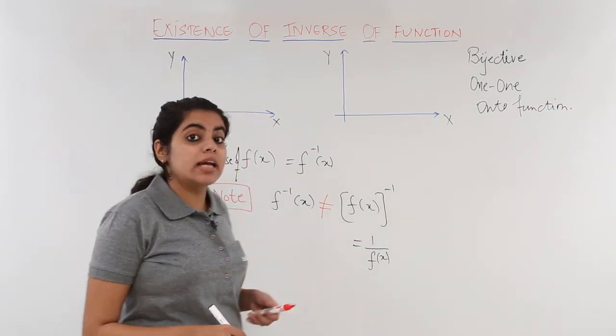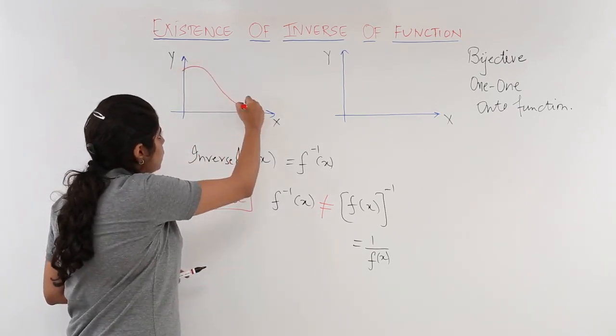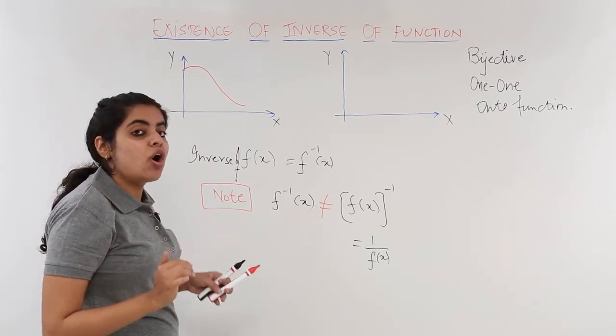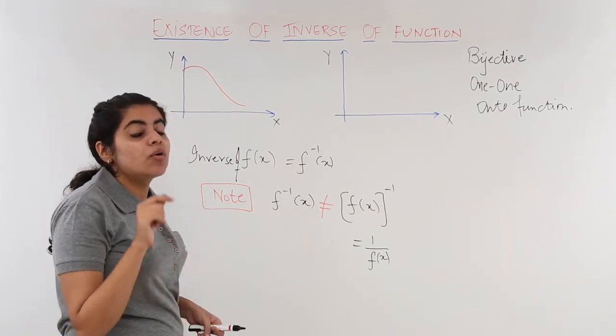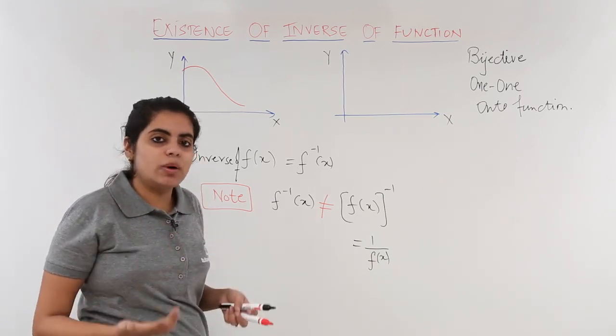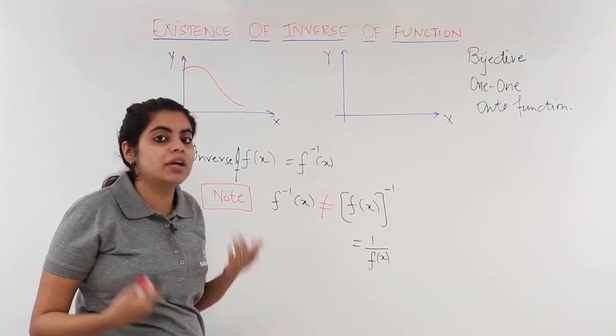Now, one thing is again very clear that a graph which goes like this, or a strictly increasing graph or a strictly decreasing graph would always be one-one. So if it is one-one and you can check it for being onto, it would be bijective and you can find the inverse.